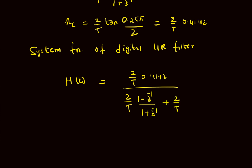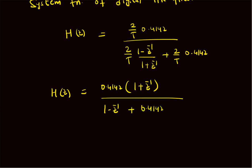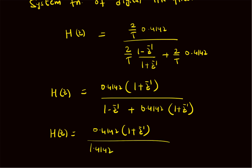By multiplying the numerator and denominator by (1 + z⁻¹), we can write H(z) as a rational polynomial in terms of z⁻¹. The 2/T cancels as it is common in both numerator and denominator, so H(z) = 0.4142 × (1 + z⁻¹) divided by (1 − z⁻¹) + 0.4142 × (1 + z⁻¹). We can rewrite this as H(z) = 0.4142(1 + z⁻¹) / [1.4142 − 0.5857z⁻¹], where 0.5857 = 1 − tan(π/8).